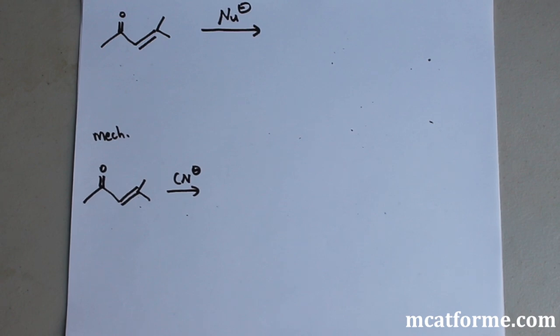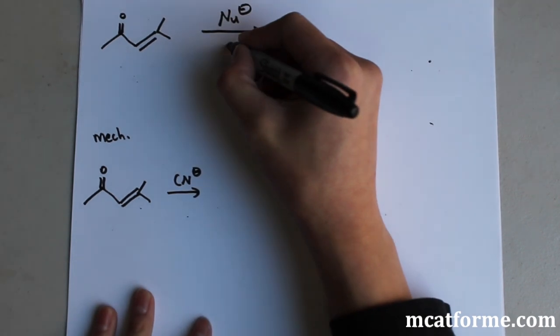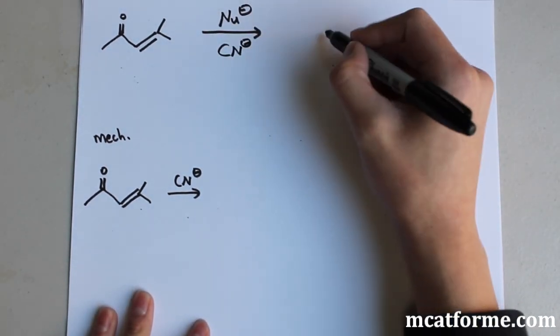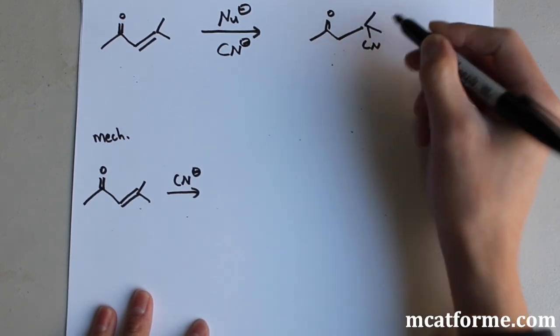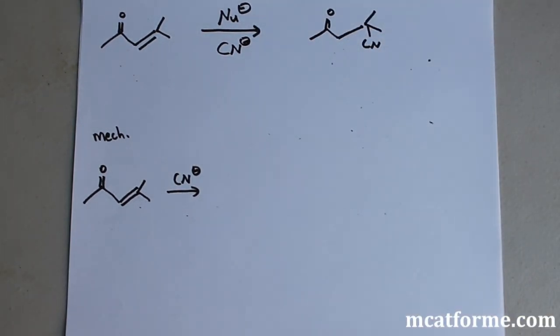So what if we react this with a nucleophile? What's going to happen? And our nucleophile that we're going to work with is CN-. Our product is going to look like this. So it just adds on the beta carbon. So we're going to see how that actually works.